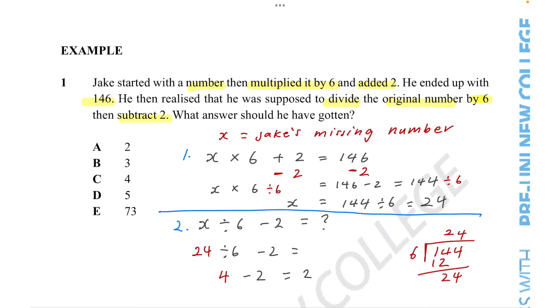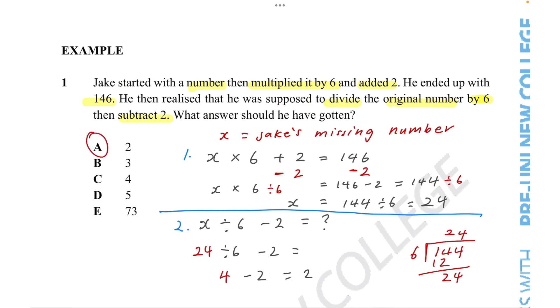So the answer Jake should have gotten is 2, which is option A. To summarize, when we are finding a determining unknowns question, there are 4 simple steps we need to follow.